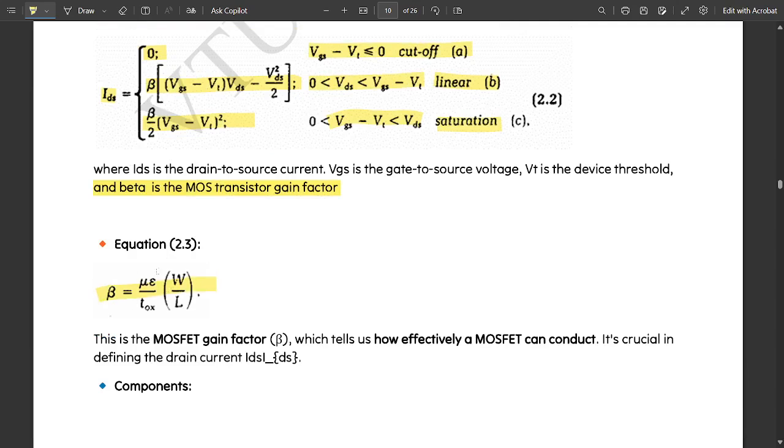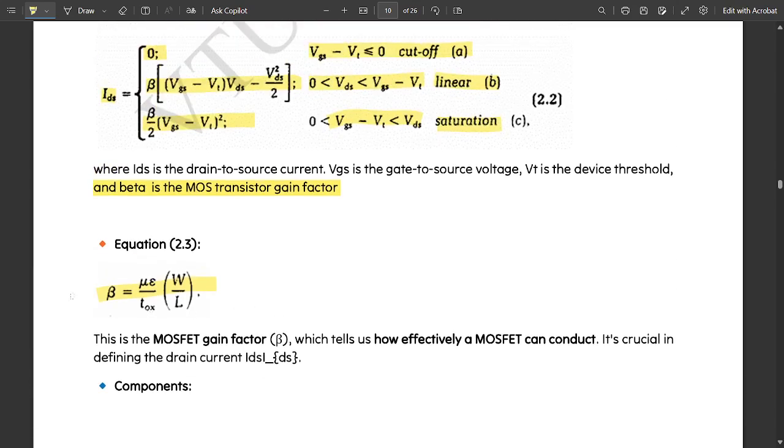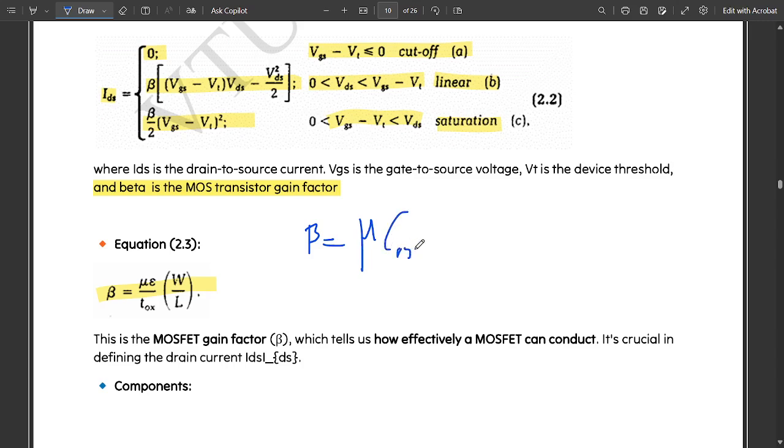Beta is given by mu into epsilon divided by TOX into W by L, where W is the width of the transistor and L is the length of the transistor. The actual equation is beta equals mu COX into W by L.